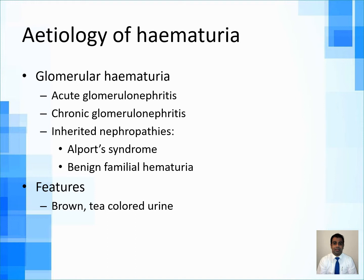The features of glomerular hematuria are important to keep in mind. The color of the urine is extremely important — glomerular hematuria causes brown or tea-colored urine. You do not get bright red hematuria. Just by looking at the urine with the naked eye, you can suspect glomerular hematuria because this urine tends to be brown or tea-colored.